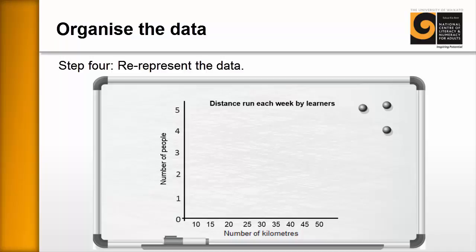You're going to ask the learners to collate the data and write it in themselves. How many people ran 10 kilometres? There were two. How many ran 15? There were two. 20? There were three. And so on. You can see that nobody ran 35, one ran 40, one ran 50. You might have a discussion about the findings of this data.